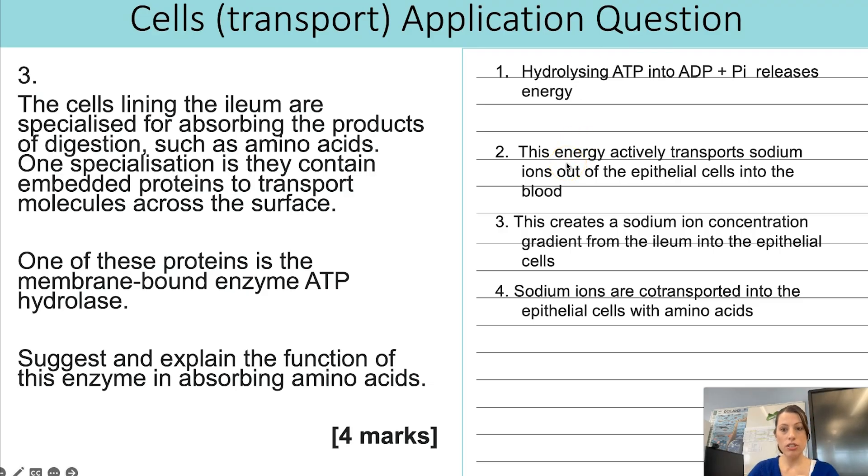So that energy is used to actively transport the sodium ions from the epithelial cell into the blood. Third mark is saying why we actively transport the sodium ions out of the cell and into the blood. That is to create that sodium ion concentration gradient. So you now have more sodium ions in the ileum compared to the epithelial cell. And because you have that concentration gradient the sodium ions can move from the ileum into the cell and the amino acids co-transport with sodium ions. So number four that's using your knowledge of co-transport and the first part was using your knowledge of ATP hydrolase.